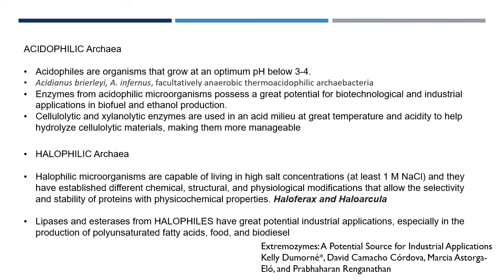About acidophilic archaebacteria — acidophilic means acid-loving. Acidophiles are organisms that grow at an optimum pH below 3 to 4, meaning very acidic conditions. Acidianus is a genus of archaebacteria which is a facultatively anaerobic thermoacidophilic archaea. Enzymes from these acidophilic microorganisms possess great potential for biotechnology and industrial applications in biofuel and ethanol production. Cellulytic and xylanolytic enzymes are used in acidic milieus at greater temperatures and acidity to help hydrolyze cellulytic materials, making them more manageable.